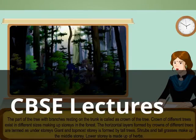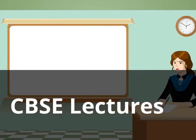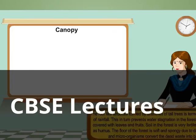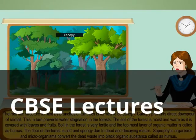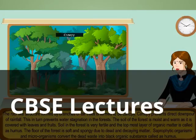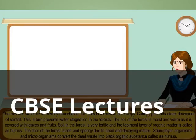The lower story is made up of herbs. Canopy: The roof-like structure formed by branches of tall trees is termed the canopy. The canopy prevents direct downpour of rainfall, which in turn prevents water stagnation in the forests.